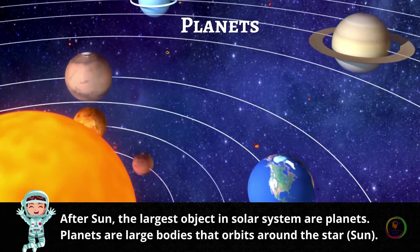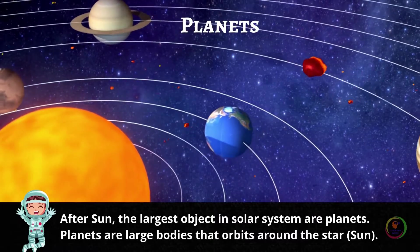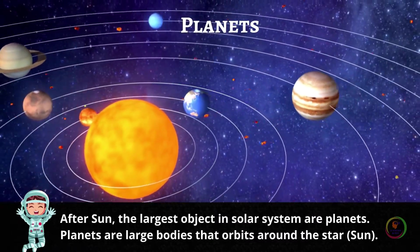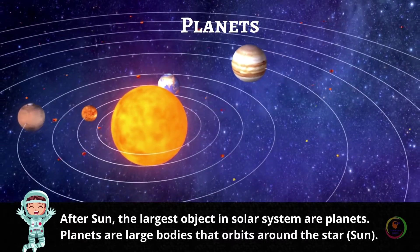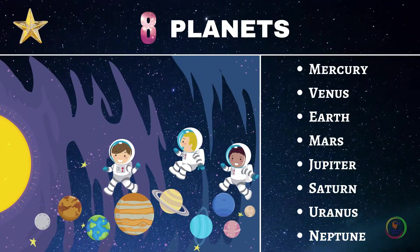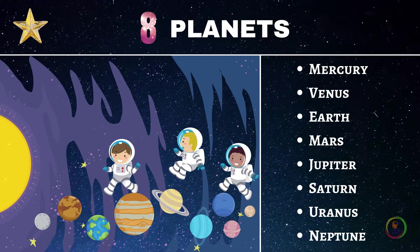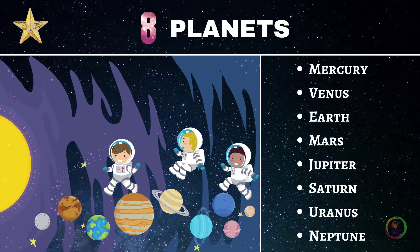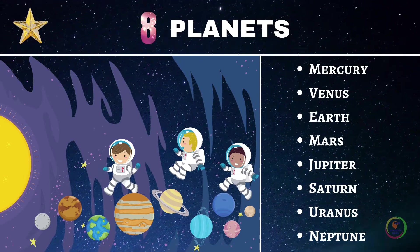Planets. After the sun, the largest objects in our solar system are planets. Planets are large bodies that orbit around a star, that is the sun. There are eight planets in our solar system. They are Mercury, Venus, Earth, Mars, Jupiter, Saturn, Uranus and Neptune.